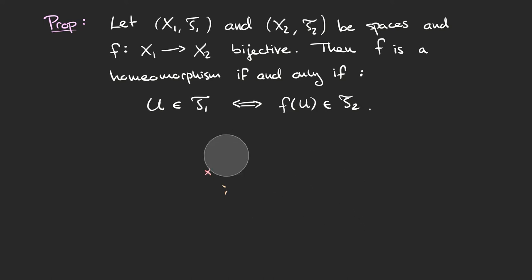The proposition we're going to look at now says something similar: if we have two topological spaces X1 and X2 with topologies T1 and T2 respectively, and a bijective function between them, then this function is a homeomorphism precisely when the following condition is fulfilled — a subset U is open in X1 if and only if its image is open in X2. In other words, a bijective function between two topological spaces is a homeomorphism if and only if it induces a one-to-one correspondence between the open sets of the two spaces.